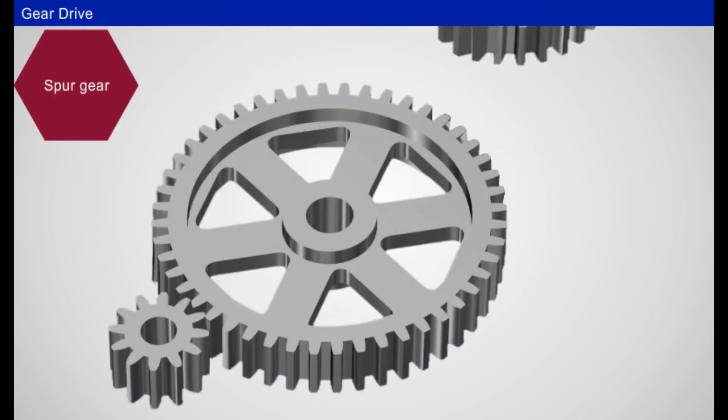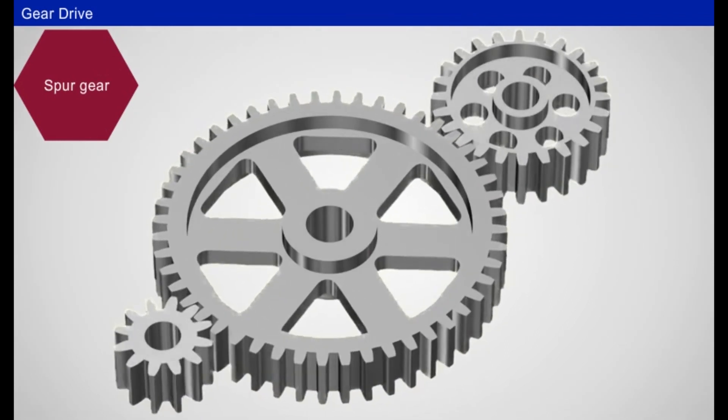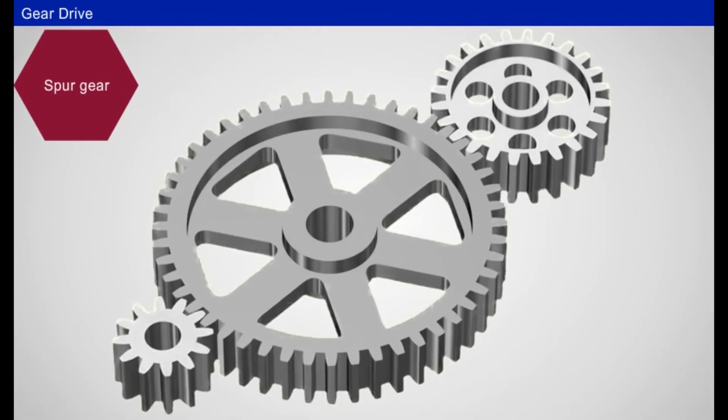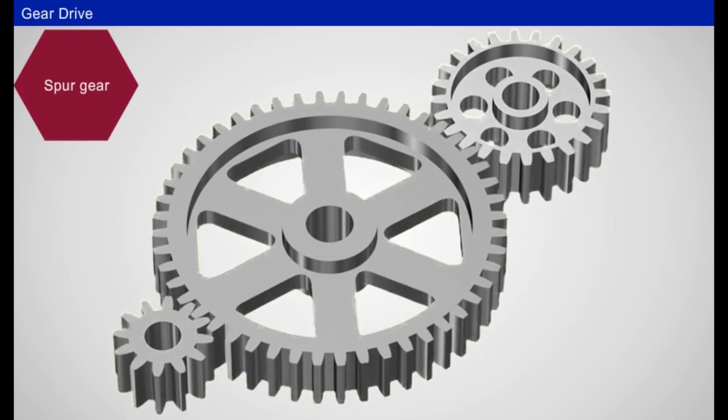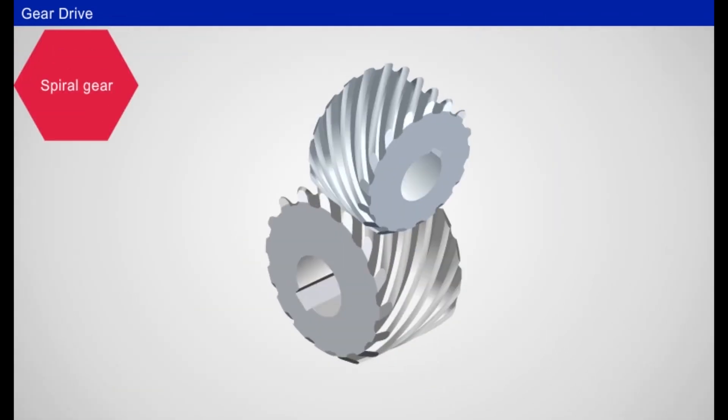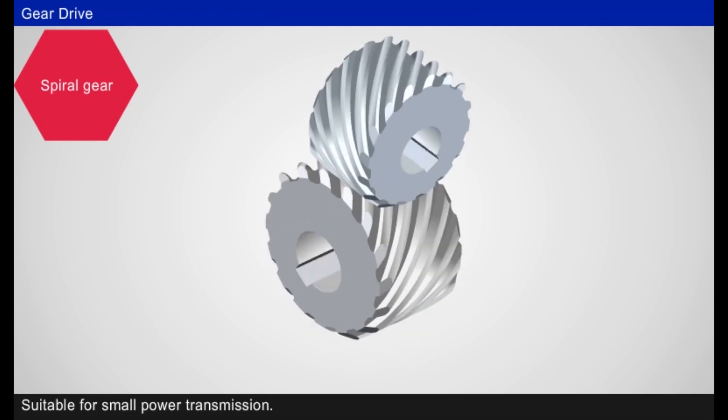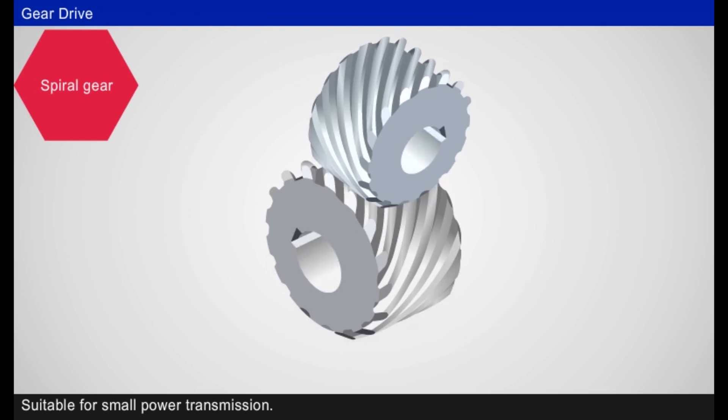Spur gear: When the axis and teeth of gear are parallel to the center line of gear, it is called spur gear. Spiral gear is used to connect non-parallel and non-intersecting shafts. It is also called skew gear. These gears are suitable for small power transmission.